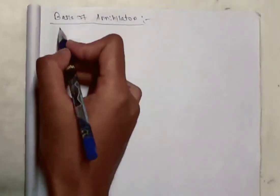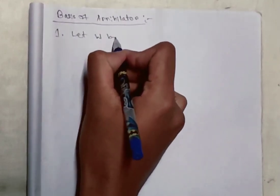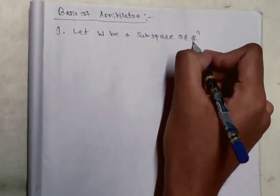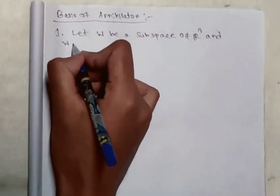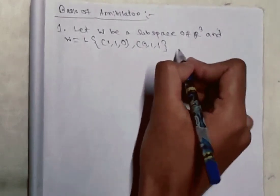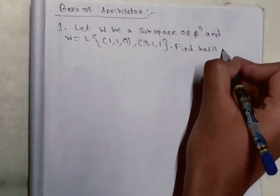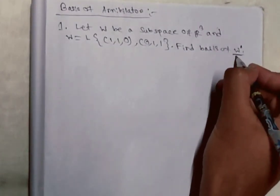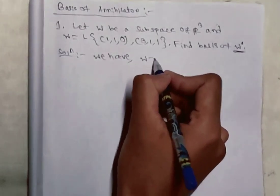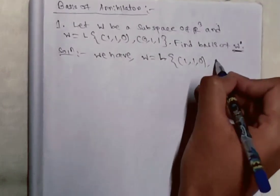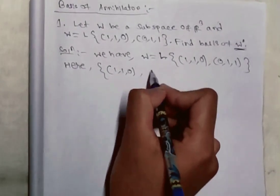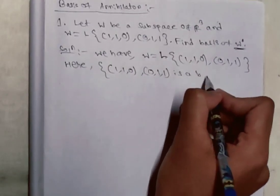Today we will see how we can find the annihilator basis. The given question is: let W be a subspace of R³, where W equals the linear span of {(1,1,0), (0,1,1)}. We have to find the basis of W⁰, where W⁰ means the annihilator. So here (1,1,0) and (0,1,1) form a basis of W.